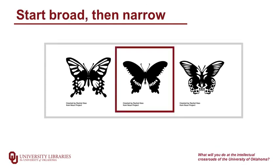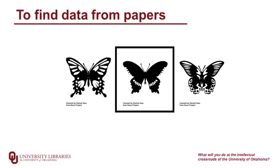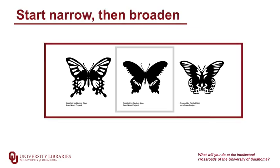Then narrow it down once you're in the repository to get something more specific to your research. If you're going to find data associated with papers, your strategies are going to be really similar to what you do to search for literature. In this case, you may want to start narrower and then broaden it out to get a suitable number of datasets.